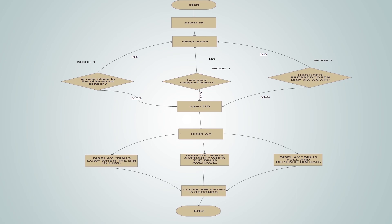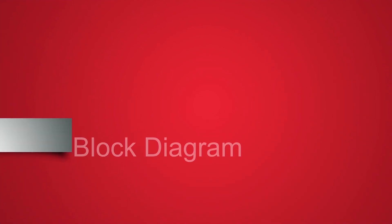A message is shown based on the level of the bin: if the bin is low it will display 'bin level is low', if the bin is average it will display 'bin level is average', and if the bin level is close to full, it will alert the user to replace the bin bag by displaying 'bin is full, change bin' on the LCD. After some time, the lid will close automatically.